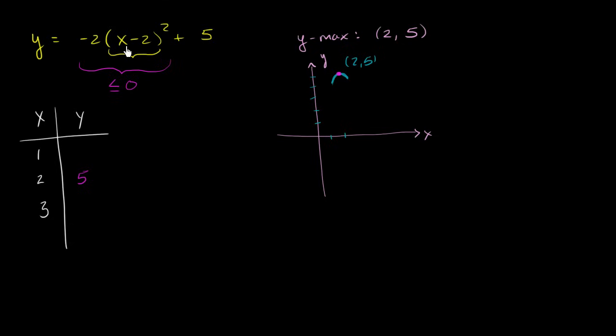When x is equal to 1, 1 minus 2 is negative 1. Squared is just 1. So this thing is going to be negative 2 plus 5. So it's going to be 3. And when x is equal to 3, this is 3 minus 2, which is 1. 1 squared is 1 times negative 2 is negative 2 plus 5 is 3 as well.